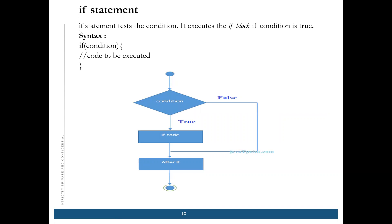In the if statement, we test the condition and it executes if the condition is true. The flow: check the condition first — if it is true, it will enter the loop and execute the code inside. Then it comes out. If it is false, it comes out of the loop anyway. The syntax is: if(condition) { code to execute }.